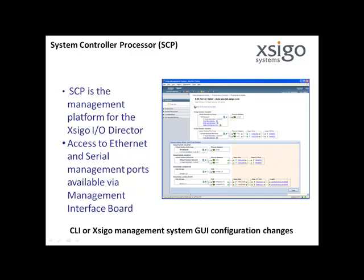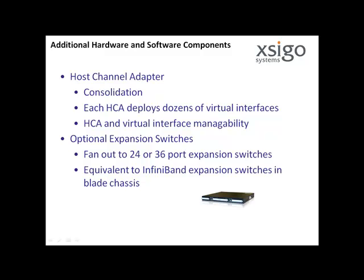The SCP does not participate in the data path. In addition to the SEGO I.O. Director, the following hardware and software components complete the path to deliver SEGO virtual interfaces to servers. The host channel adapter in each server consolidates network and storage connectivity; each HCA can deploy dozens of virtual interfaces within the server. SEGO host drivers provide the software support necessary to manage both the HCA and the virtual interfaces. If connectivity to more than 24 servers is required, you can fan out using 24 or 36-port expansion switches, which are equivalent to the InfiniBand expansion switches in blade chassis.